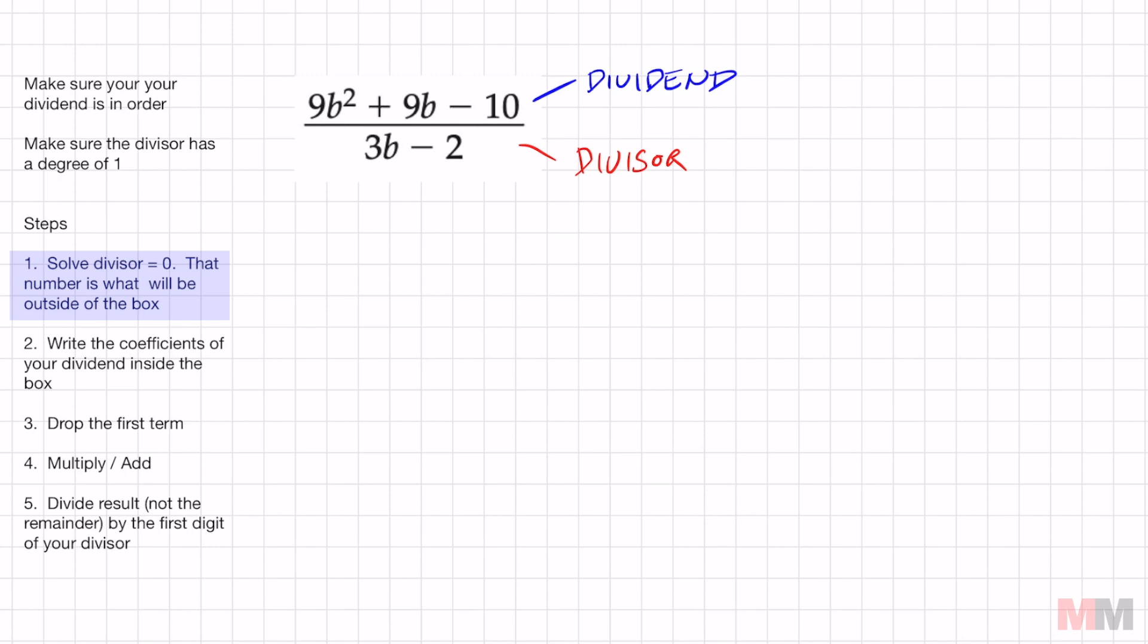It says set my divisor. So I'm going to set that 3b minus 2, set it equal to 0 and solve for b. Add 2 to both sides. You got 3b equals 2 divided by 3, and that number two-thirds is what's going to go outside your box. It's going to look like that. Done. Number two. So the coefficients of my dividend, 9, 9 and negative 10. As long as that is in order, I can write that inside the box right here. 9, 9, negative 10.